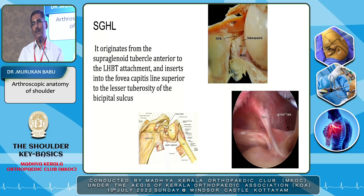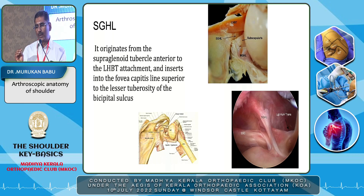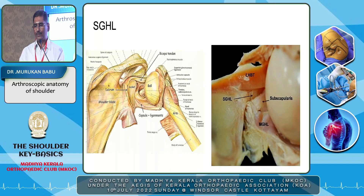Coming to the third anatomical structure in this position — the superior glenohumeral ligament. It originates from the supraglenoid tubercle, almost at the origin of the biceps tendon, just anterior to the long head of the biceps tendon attachment. It is inserted into the fovea capitis, superior to the lesser tuberosity at the bicipital sulcus, and some books say it is attached in continuation with the superior part of the subscapularis tendon. You can simply remember that the superior glenohumeral ligament starts from the origin of the biceps and inserts into the area of the subscapularis. If you look carefully, you can see it in almost all shoulders, but most of the time it is not surgically important, so we may omit looking at it.